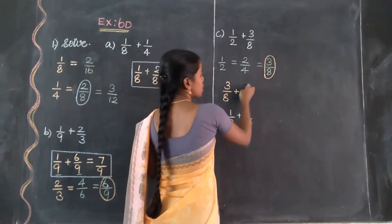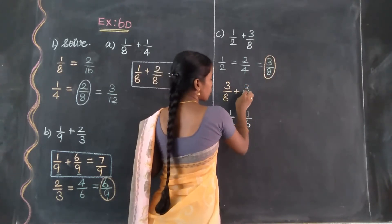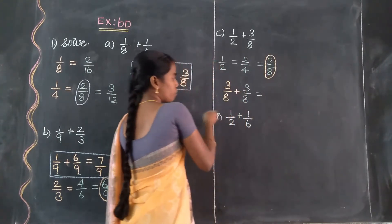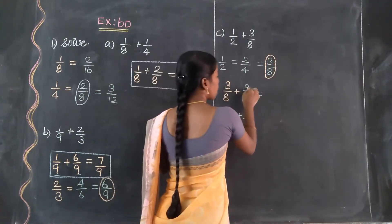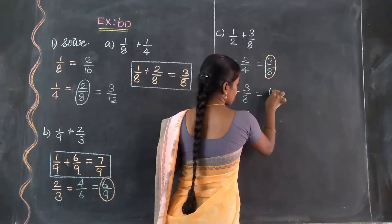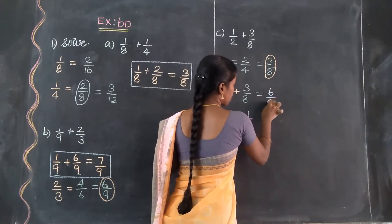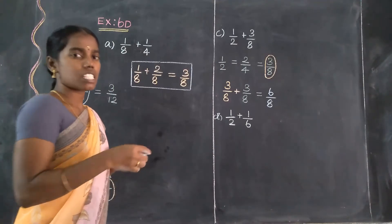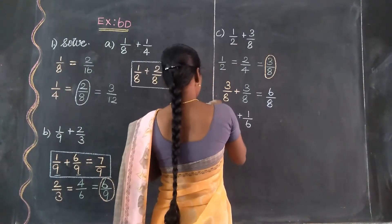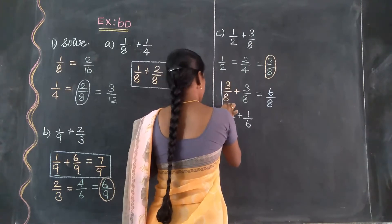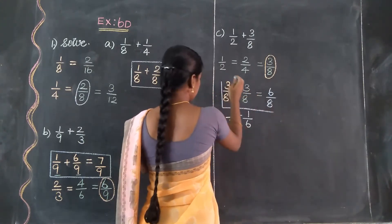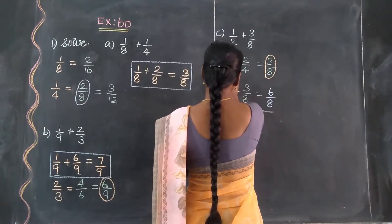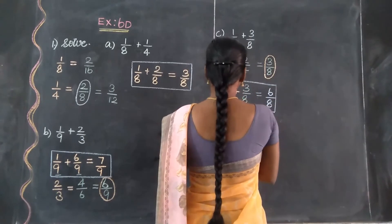So 3 by 8 and this is also 3 by 8. The second value has no change. So we add: 3 plus 3 equals 6. Since it is a like fraction, we just add the numerators, giving us 6 by 8.